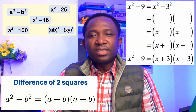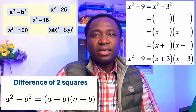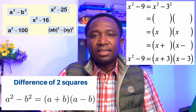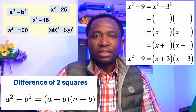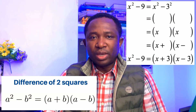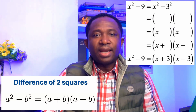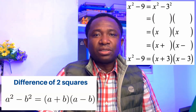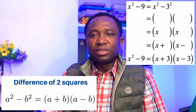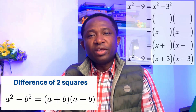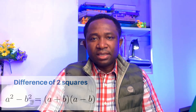For example, x squared minus 9 can be represented as difference of two squares as x squared minus 3 squared. And now we have (x minus 3) in brackets times (x plus 3) in brackets. With the brackets, it doesn't matter which comes first.